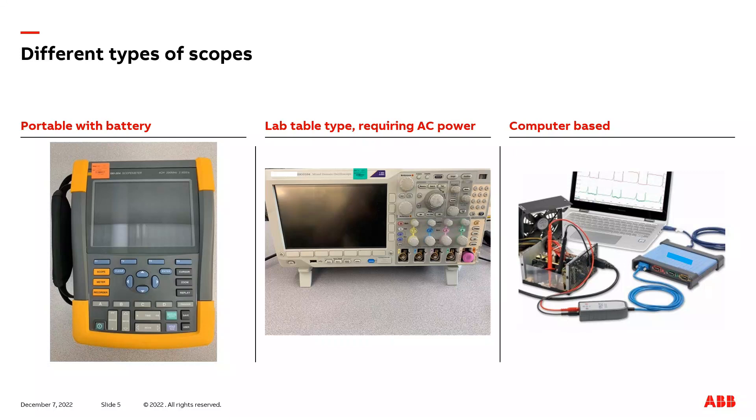Now the scope in the middle is a lab table type. This always requires AC power to power it on. The benefit of this scope is there are versions at the high end that are very feature rich. So if you're looking for a scope with lots of capabilities, you may be looking at a lab table style scope.